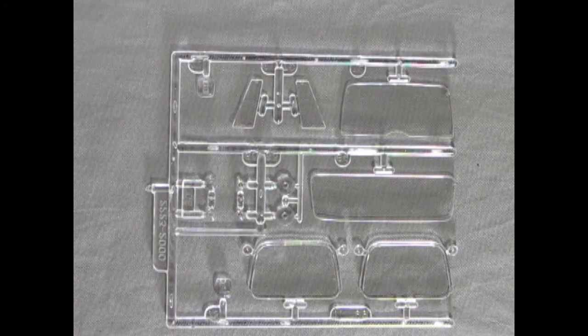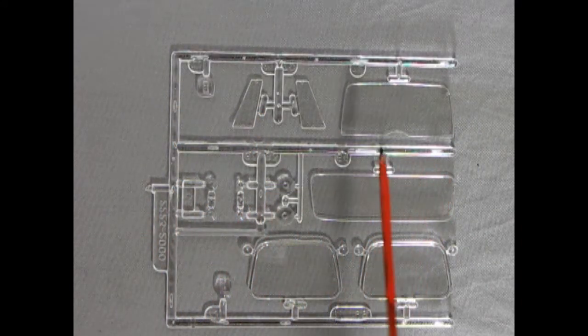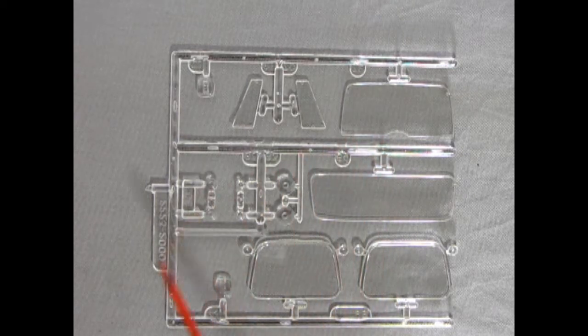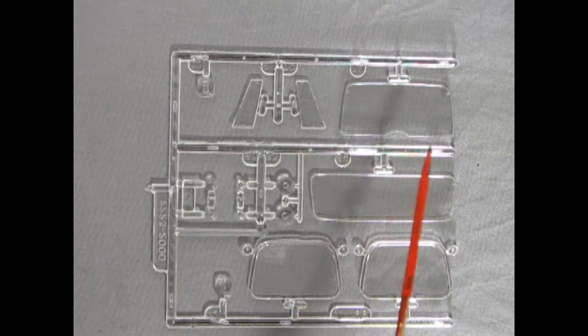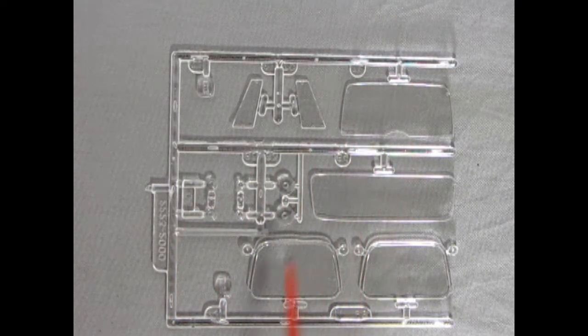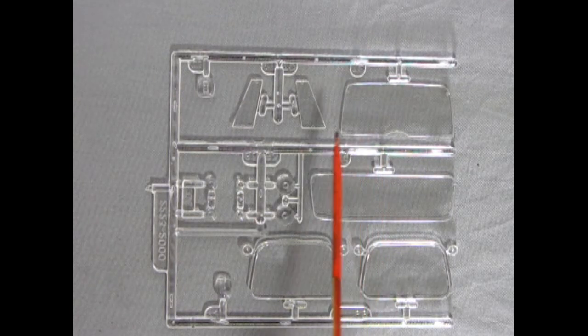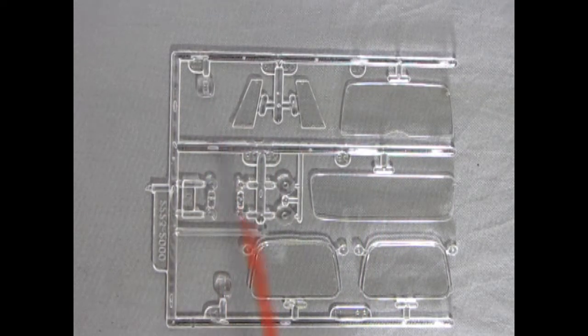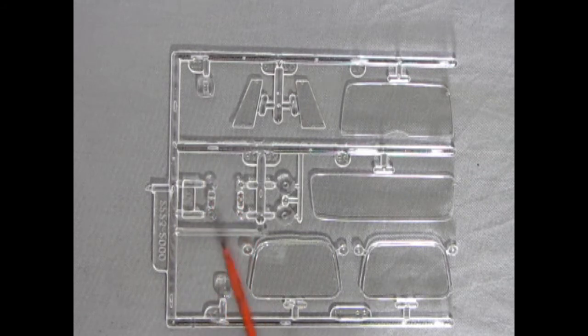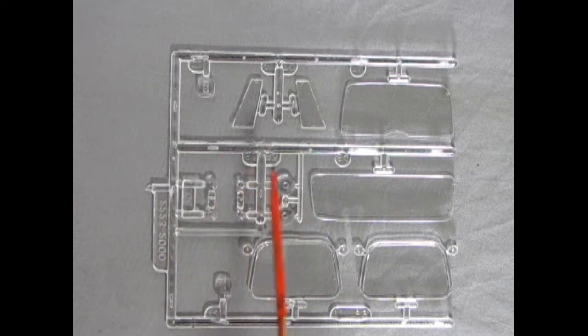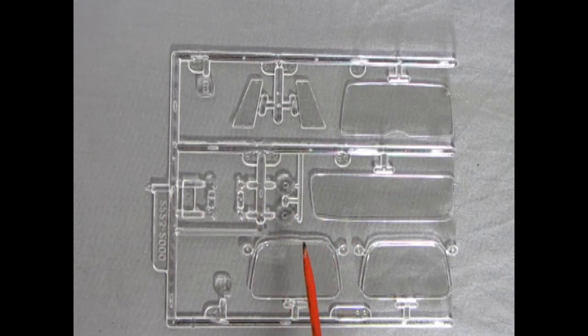Here we have the parts tree that makes up all our clear components. Unfortunately Monogram never put this in a separate bag so there are spots where there's a little light scraping which I'll have to polish out. Interestingly there are no red components or clear red components in this kit so you're going to have to paint these rear tail lamps with something like Tamiya transparent red or Tester's stoplight red enamel.